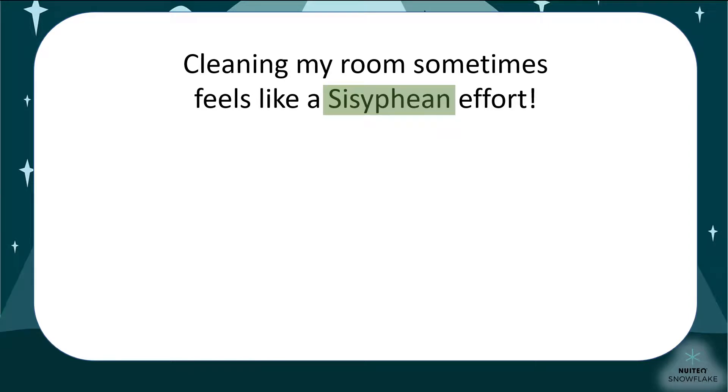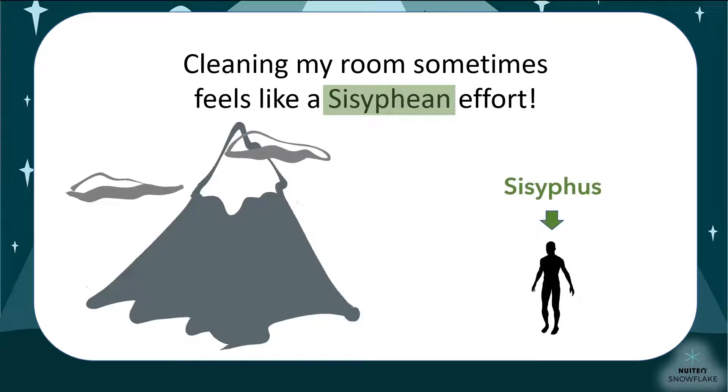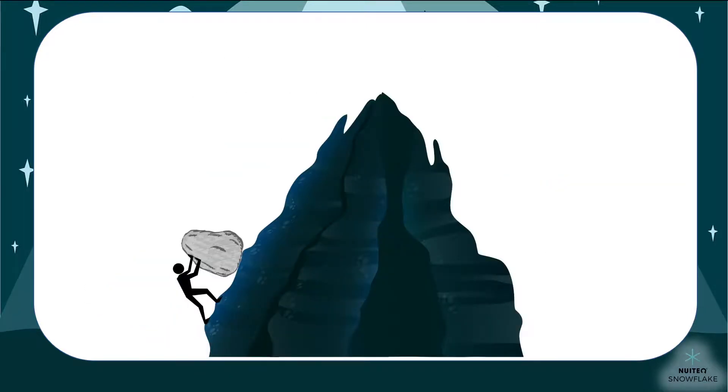Let's have a closer look at the word Sisyphean. It comes from the name of a king in Greek mythology who was called Sisyphus. He had done something that made the gods angry, so as a punishment, he had to push the same boulder up a hill forever. Right when Sisyphus got close to the top of the hill, the boulder would roll all the way down again, and he would have to start over.